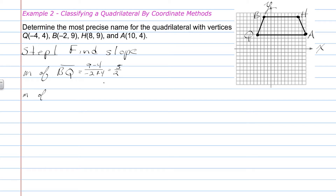The slope of the opposite side HA is found the same way: subtracting the y values, 4 minus 9 in the numerator, and subtracting the x values, 10 minus 8 in the denominator. This gives us negative 5 over 2. So we just showed, using the coordinate method, that side BQ and side HA are not parallel.